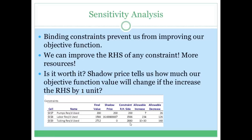What does it mean to have a binding versus a non-binding constraint? A binding constraint is the limiting constraint. If we could get more resources — if we could increase the constant on the right-hand side — we would be able to produce more and make more profit. We could improve our objective function. So binding constraints are the ones that prevent us from improving our objective function. The non-binding constraint means we're not using all of the resources available — we have some leftover tubing.